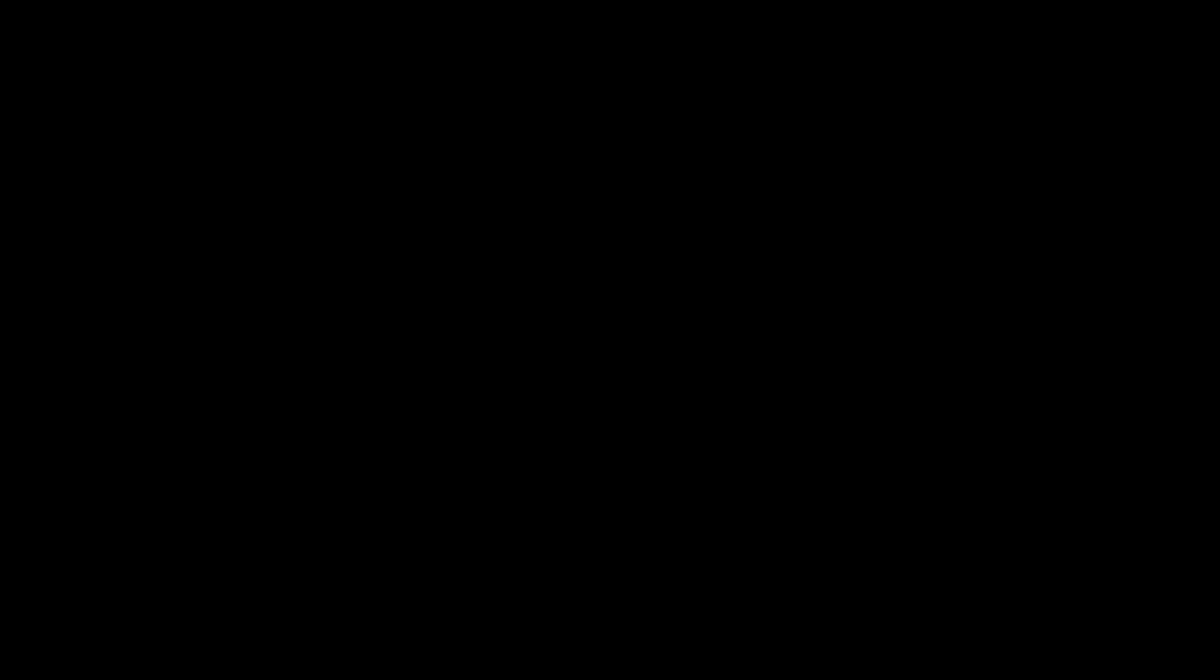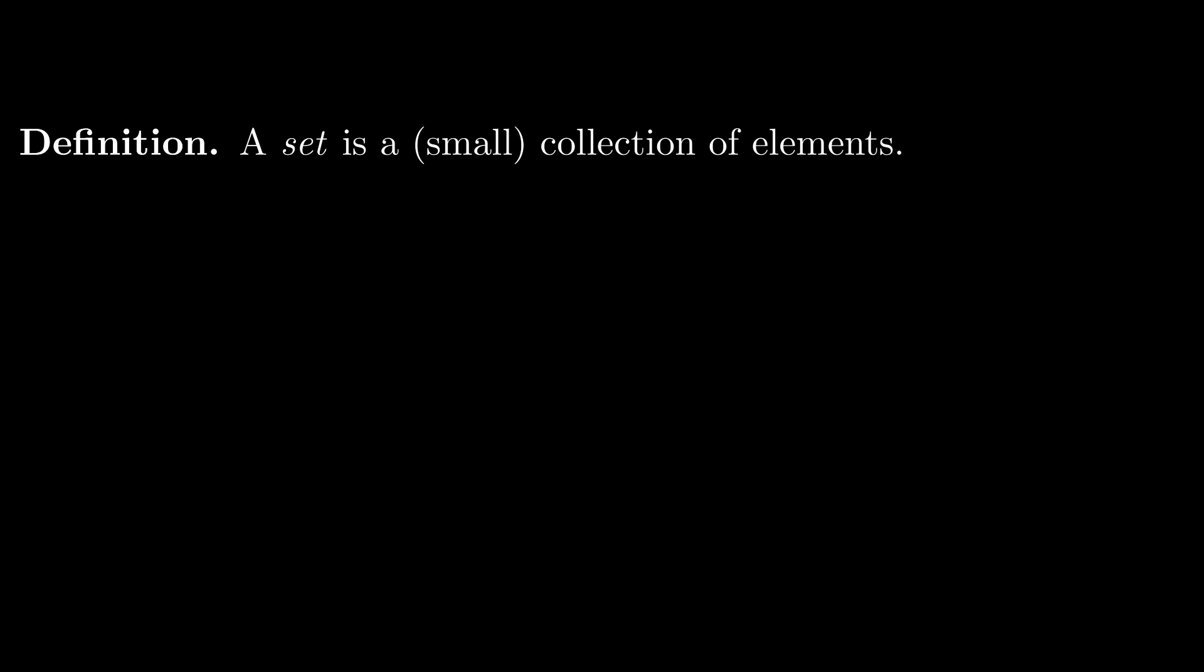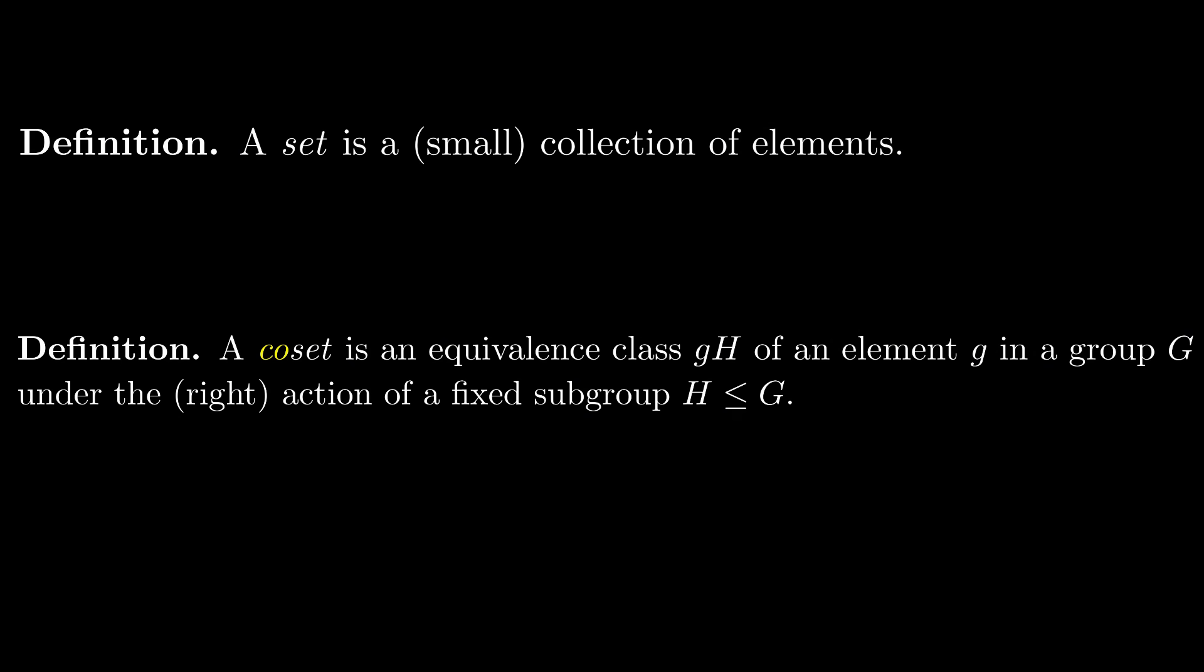What this means for mathematicians is that we get a two-for-one deal for each definition we come up with. So anyway, a set is an arbitrary container of things, called elements. If you don't want to get into trouble with the model theorists, just make sure your sets don't get too big. But otherwise, that's all there really is to sets. A co-set, as the name implies, is an equivalence class of a group element under the action of a fixed subgroup.